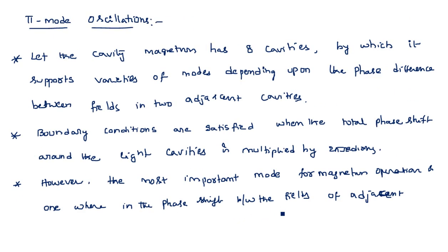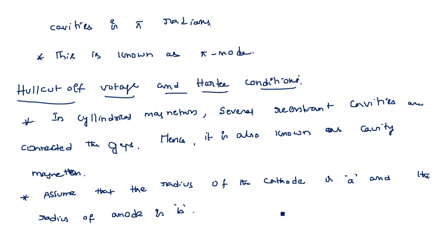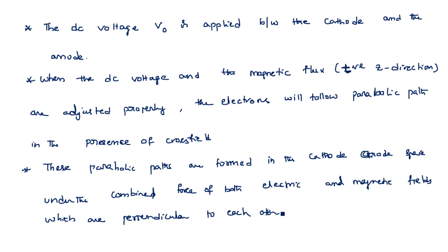So this pi mode oscillations and hull cutoff voltage and RT conditions are somewhat theoretical. How the pi mode is occurring, how the radius of the anode and cathode relate, how the electron path exists, and how the magnetic field reflects electrons back to the cathode causing parabolic projections — all this theoretical part I have explained. In examinations, if you are asked to explain pi mode oscillations and the hull cutoff, just write this theory part.